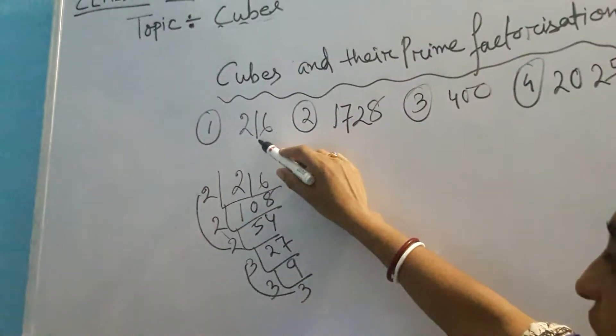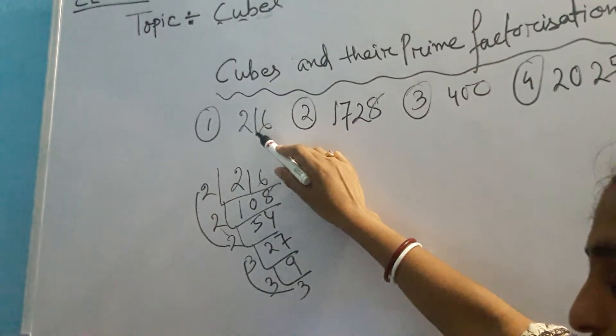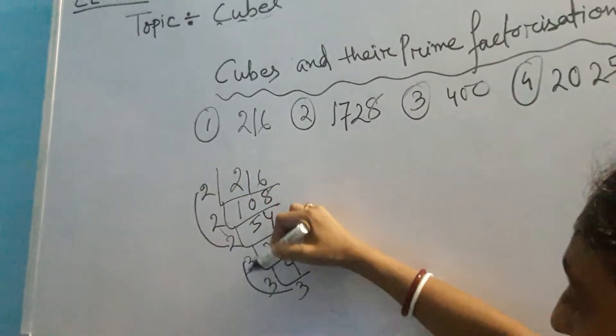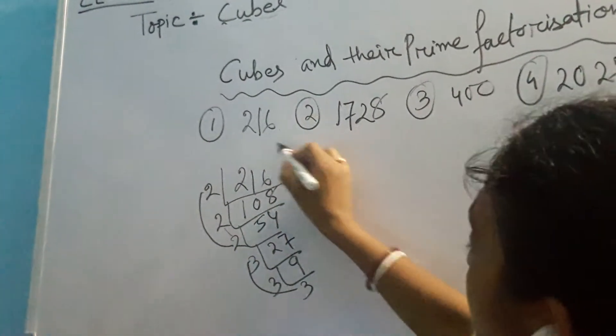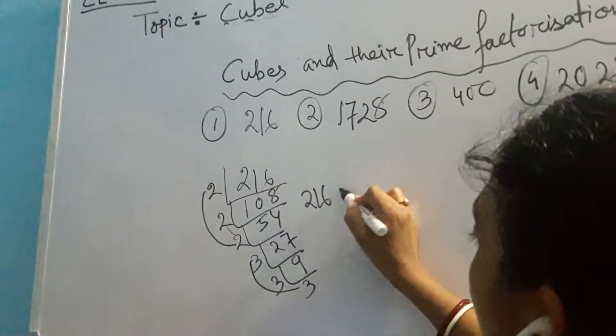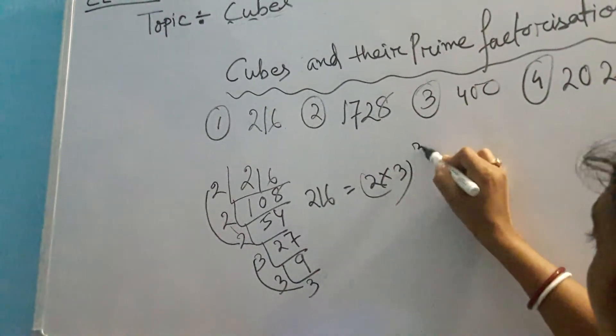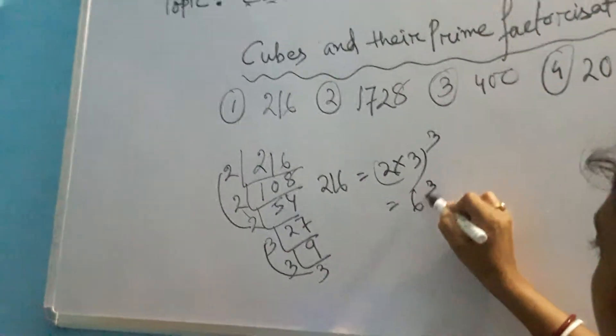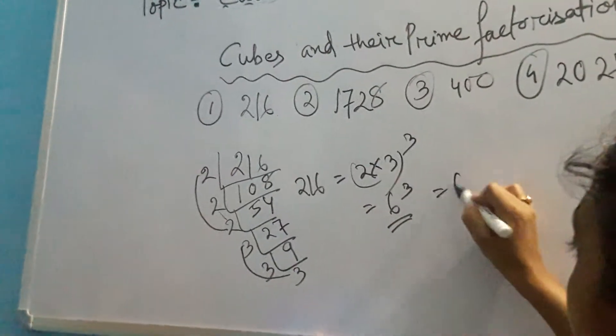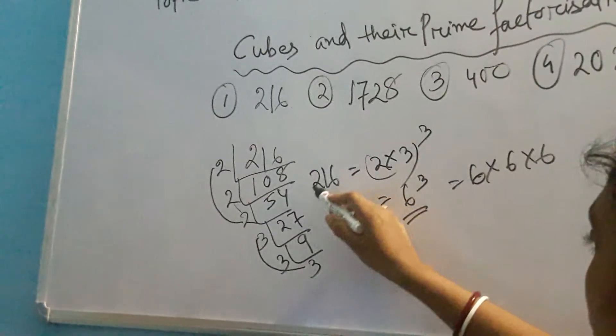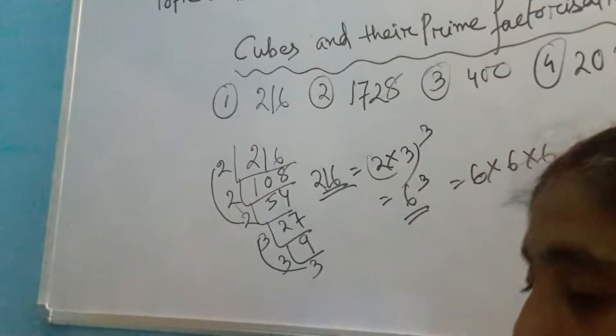When you are asking which cube it is, in this case what we will write? From the group of 3 we will take 1, 1. So this is 216 is equal to 2 into 3, the whole cube. That means it is 6 cube. That means 6 into 6 into 6, that is equal to 216.